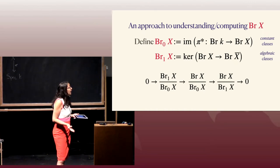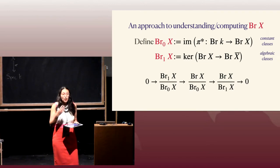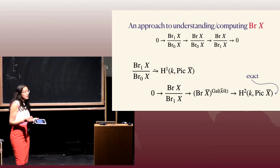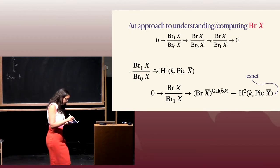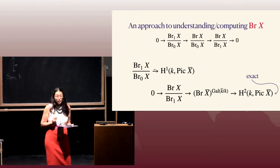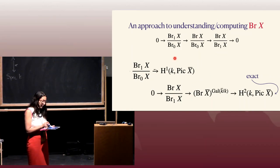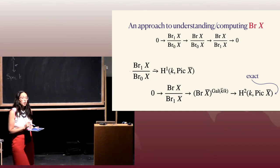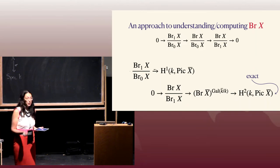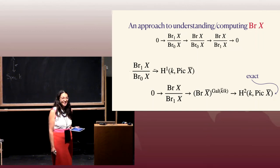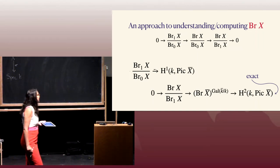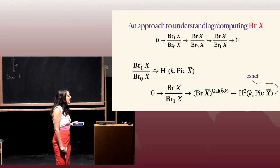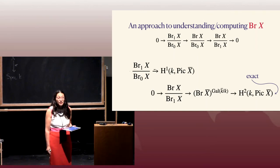From a spectral sequence, you get some exact sequences or isomorphisms for these quotients that relate them to the Galois cohomology of Pic(X-bar). Particularly if Pic(X-bar) is finitely generated and torsion-free, then this Galois cohomology group is fairly computable — assuming you have generators for Pic(X-bar), you can compute this H¹. The other part is much harder to compute, and this exact sequence hasn't been leveraged much for computational purposes, only for theoretical ones.